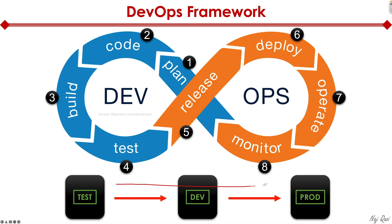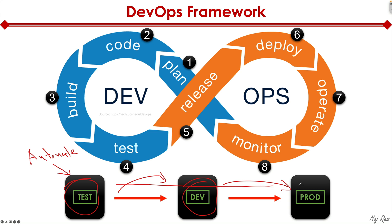This is where the CICD pipeline comes into the picture. As you can see, this entire thing is a pipeline. As we go from test to dev, from dev to prod, it's a pipeline. Each element within the pipeline can be automated — we can write scripts to spin up VMs and containers to quickly set up the test environment, do the same in the dev environment, and finally the code gets released and deployed into the production environment. Deployment is where we're going to focus next.